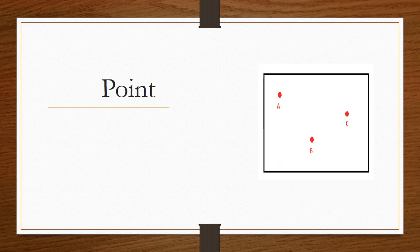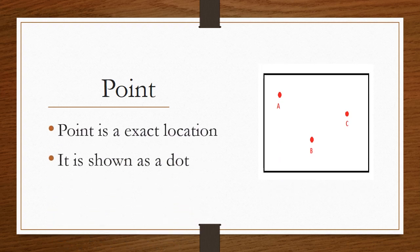So, let's start with the definition of Point. Dear students, Point is an exact location and it is shown as a dot.